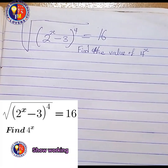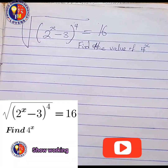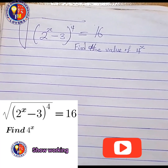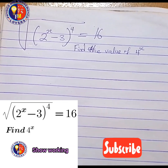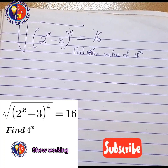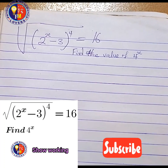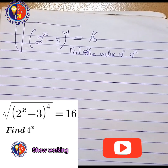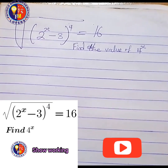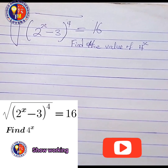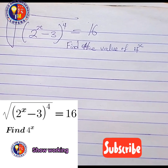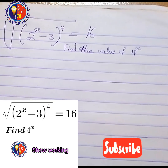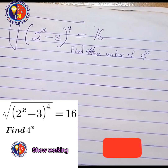Good day everyone and welcome to today's tutorial. Before us here is a question on exponential equations. It says: the square root of 2 raised to power x minus 3, the whole bracket raised to power 4, equals 16, and you are asked to find the value of 4 raised to power x. This is a very simple question and we can approach it in different ways.